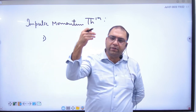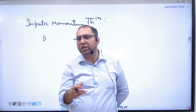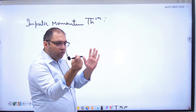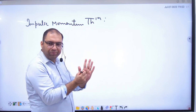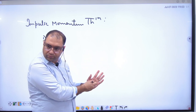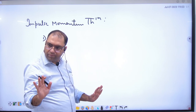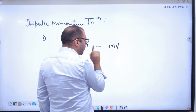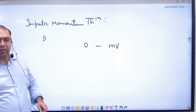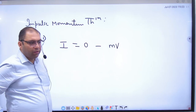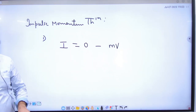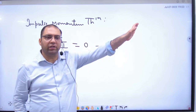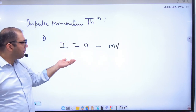Batsman ने बॉल को hit किया, या बॉल जो आ रही है उसकी speed उसके हाथ में नहीं है। तो मान लो उसके हाथ पे V velocity से बॉल आती है। रोकना उसके हाथ में है, तो final velocity क्या हो जाएगी? 0. तो initial momentum क्या है? MV. Final momentum क्या है? 0. तो impulse की value क्या होगी? Impulse इसके equal है। Impulse अगर negative है इसका मतलब body की speed slow हो रही है। यहाँ पर slow हो रही है, तो यहाँ पर negative है।